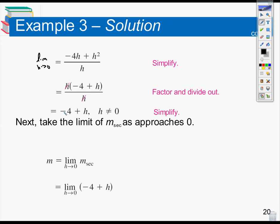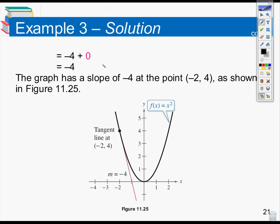Now the limit idea comes into play, because if I were to substitute h equals 0 here, I would get 0 over 0, which is an indeterminate form. So I have to use a dividing-out technique and factor the top. I can factor an h out and cancel it on both top and bottom. So all I have to do now is directly substitute into negative 4 plus h. The limit as h approaches 0 of negative 4 plus h gives me negative 4. So the slope of the function x squared at the point x equals negative 2 is negative 4.